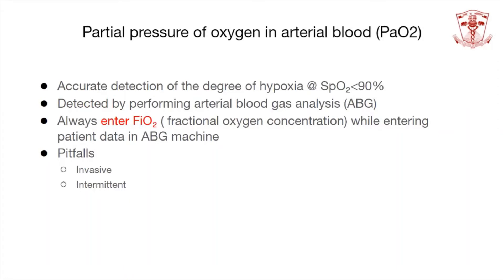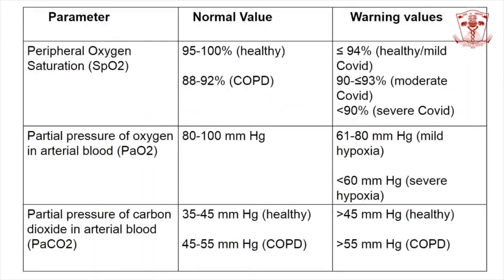Partial pressure of oxygen is detected by performing arterial blood gas analysis, usually by radial artery sampling. It is important to enter the fraction of inspired oxygen concentration correctly since FiO2 influences the PF ratio. However, a pitfall of using PO2 is that since it is an invasive technique, it only allows intermittent measurements of oxygenation levels.